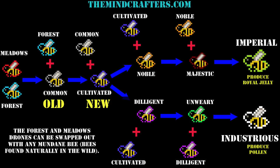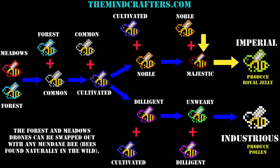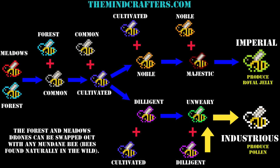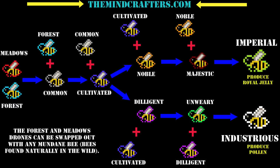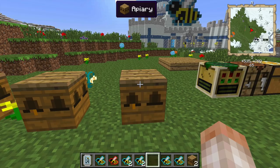We're always breeding the previous generation with the new generation to get the next generation — cultivated with common gives noble or diligent. On the top line: noble bred with its predecessor cultivated has a chance to become a majestic bee; majestic bred with noble has a chance to become an imperial bee, and we want imperial bees so we can produce royal jelly. On the bottom: diligent bred with cultivated gives an unwary bee, and unwary bred with diligent gives the industrious bee, which produces pollen. I'll make this graphic available for download on our website.